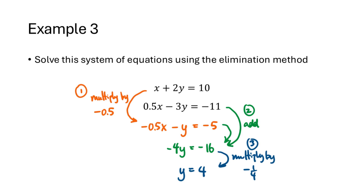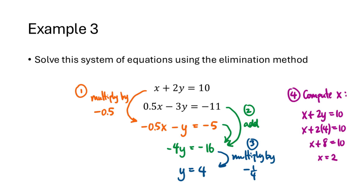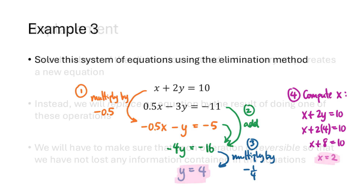We can divide both sides by negative 4, or equivalently multiply both sides by negative one-fourth, to eventually get y equals 4. Finally, we go back and compute the value of x, which is x equals 2. This shouldn't be a surprise — we already solved this system and found the solution was x equals 2 and y equals 4. But this illustrates the new method we're going to be using for the rest of this course.